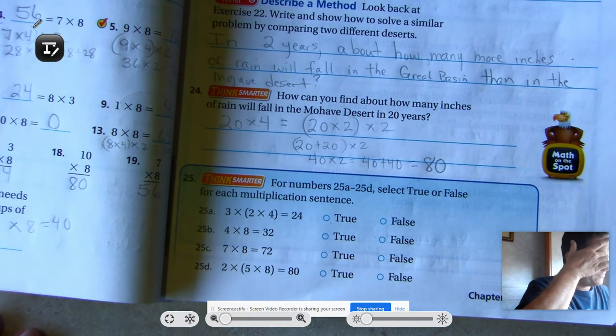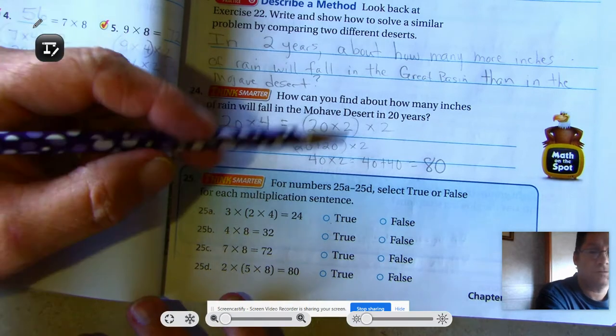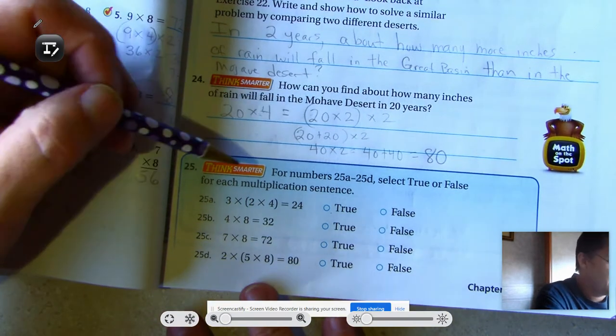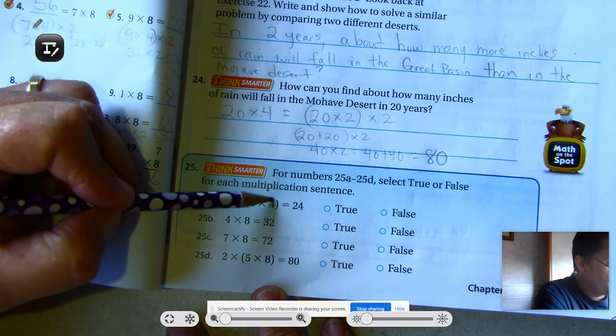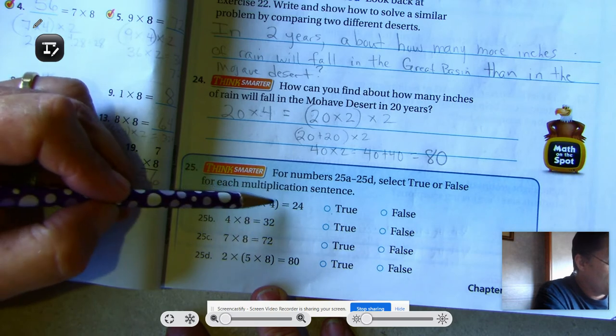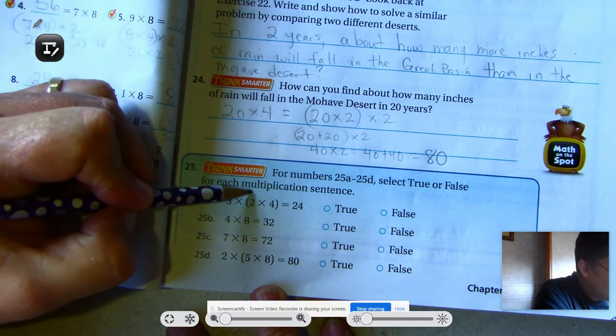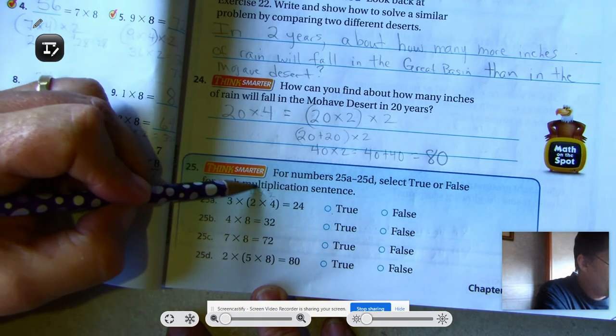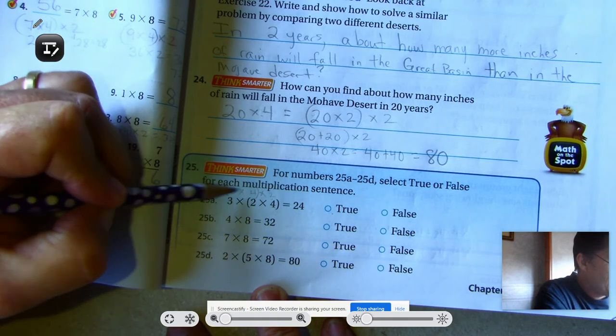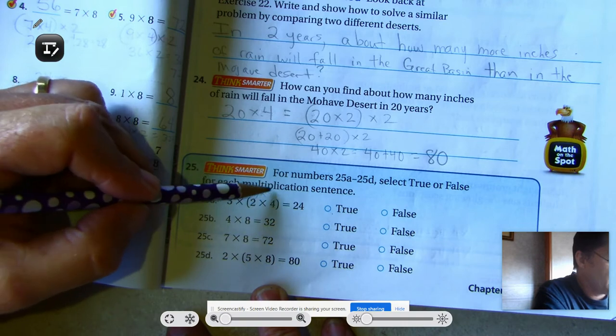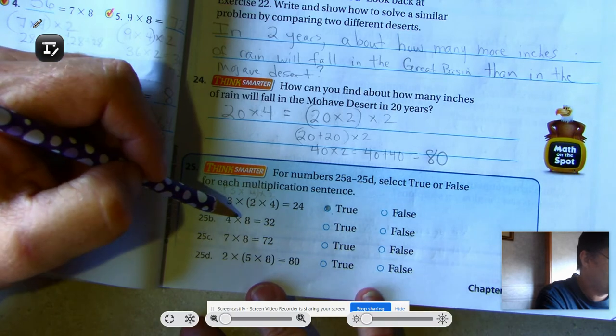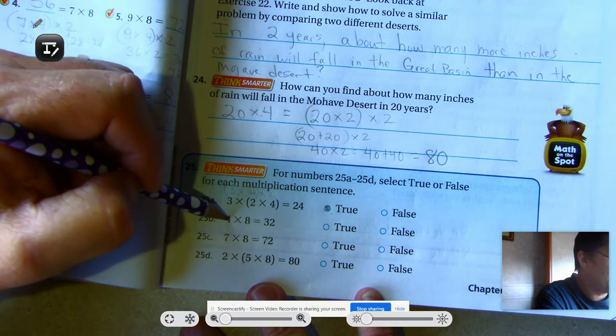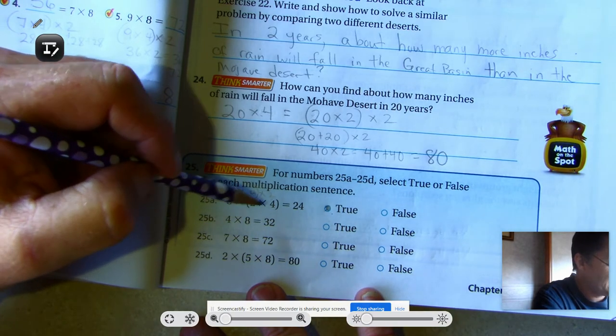Alright, 25A through D. Select true or false for each multiplication sentence. 3 times 2 times 4 is 24. Well, if I switch this around using the commutative property, I could then group 3 times 4. And 3 times 4 is 12. 12 plus 12 is 24. So that's true. 4 times 8 is 32. 8 times 2 is 16. 16 plus 16. Yes, that's true.